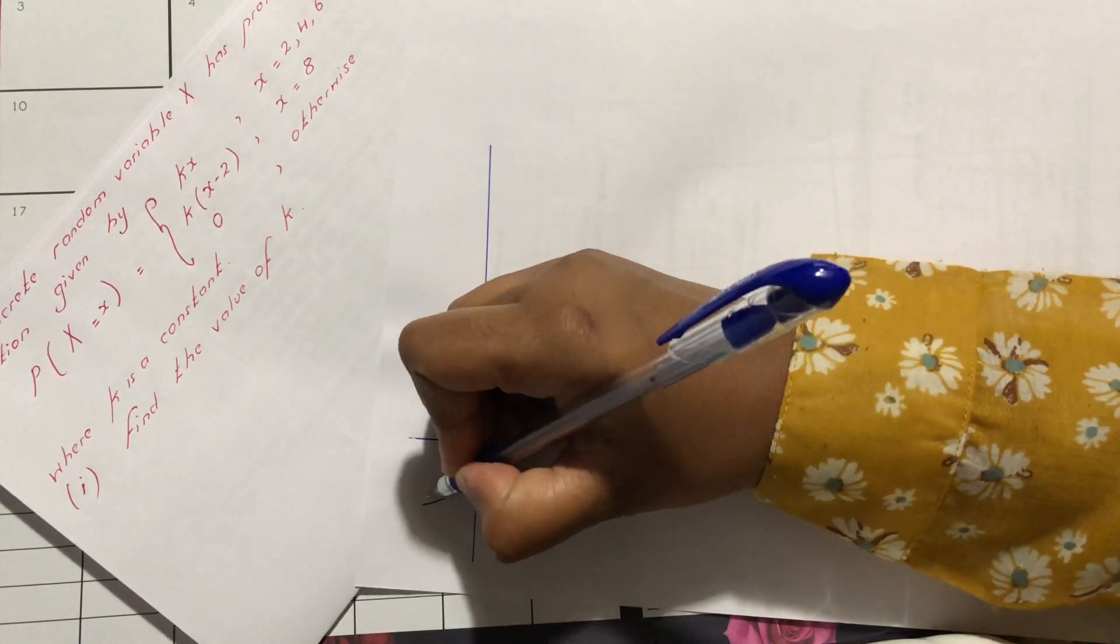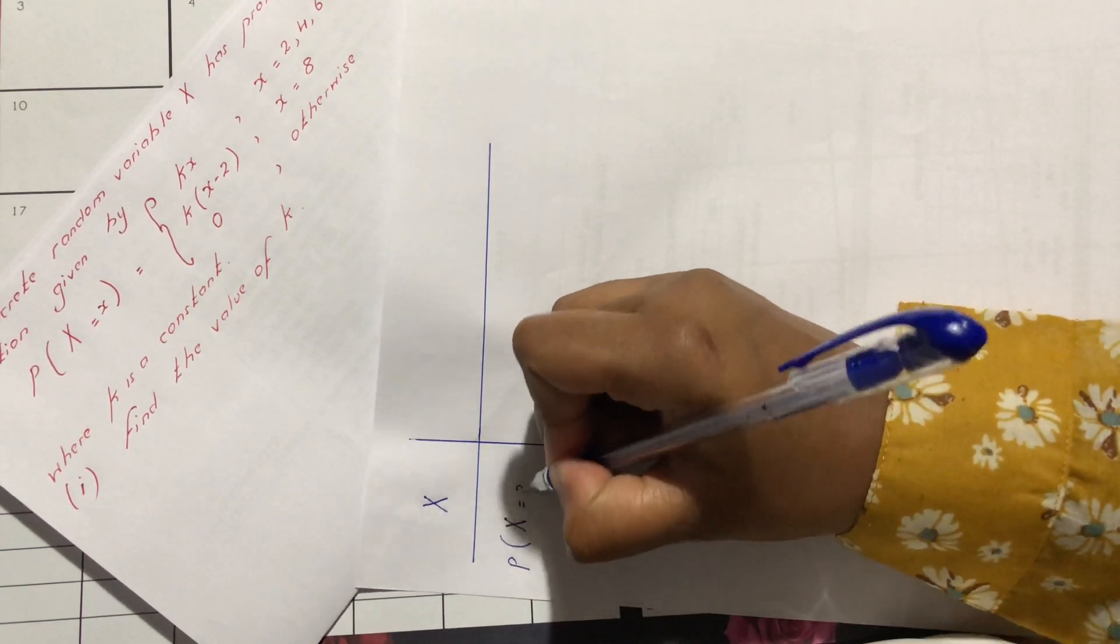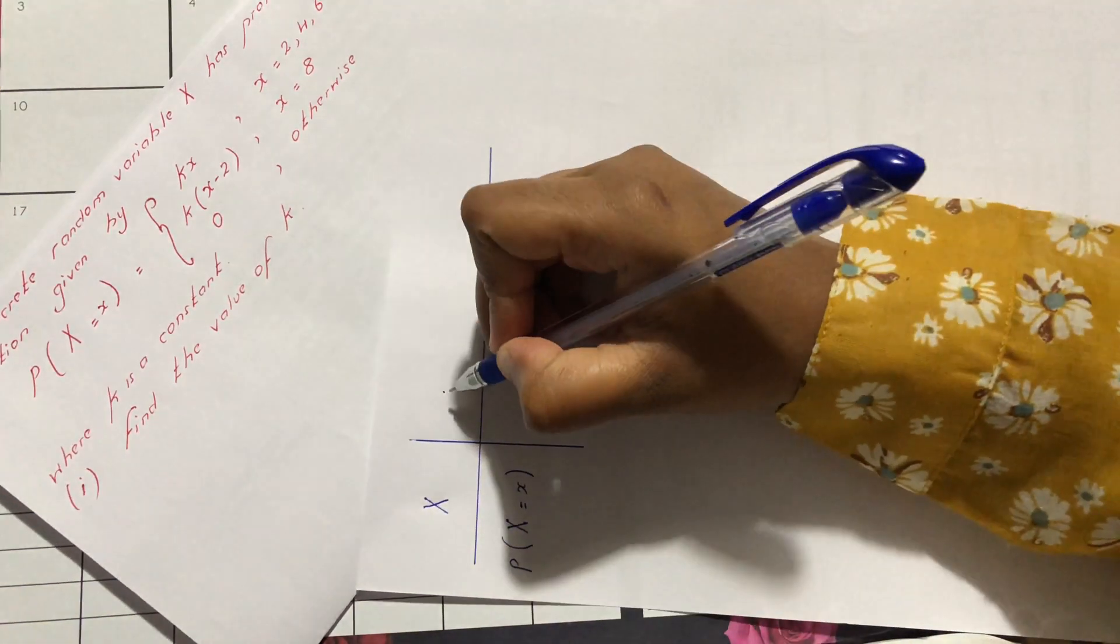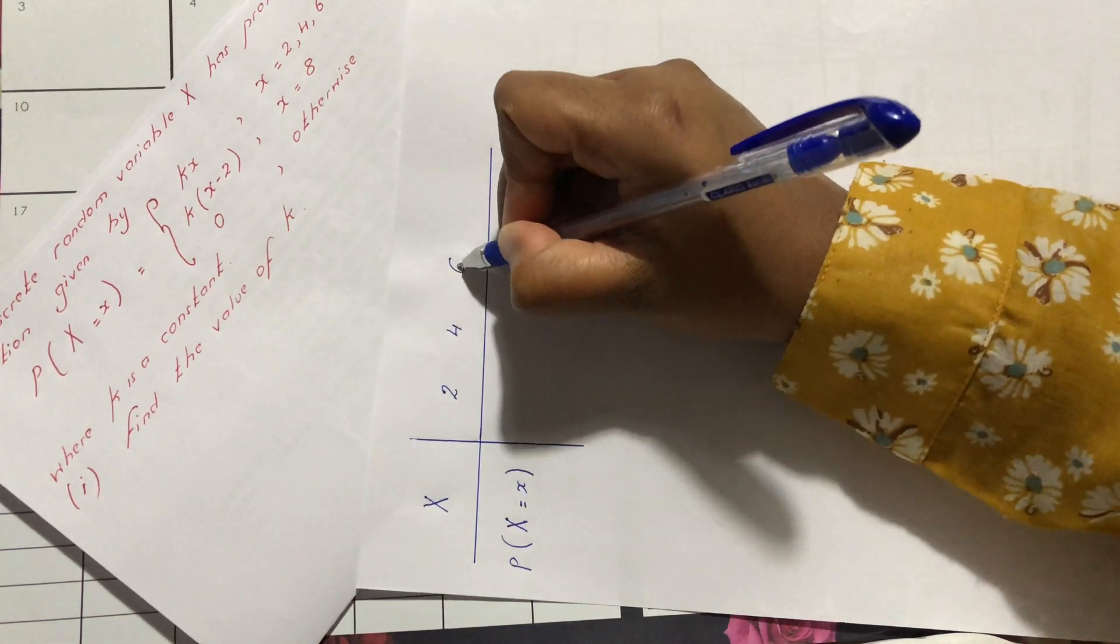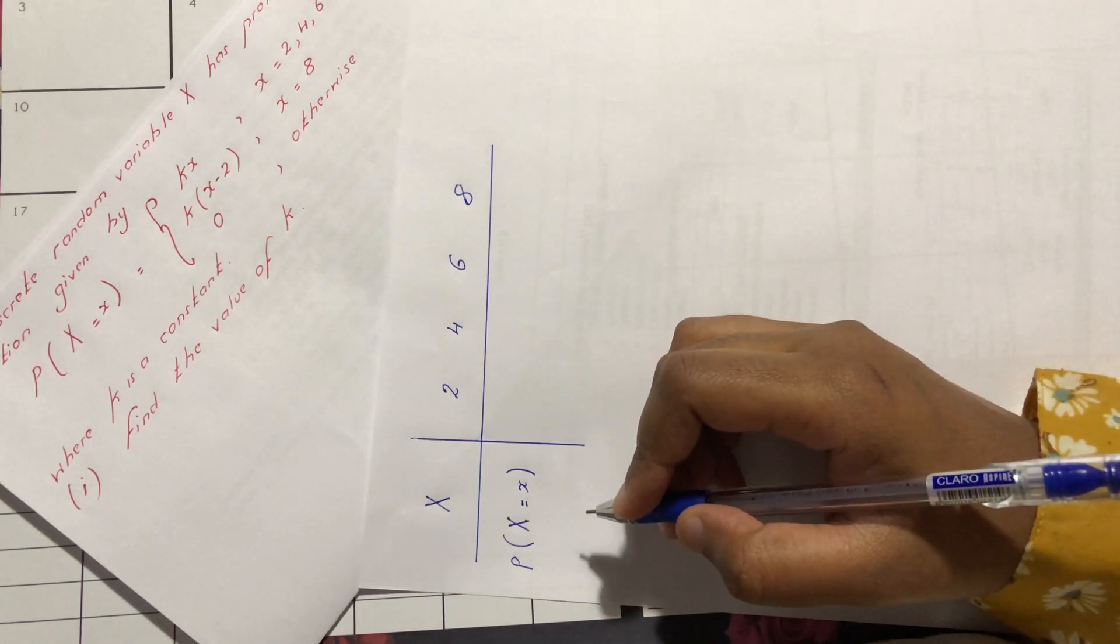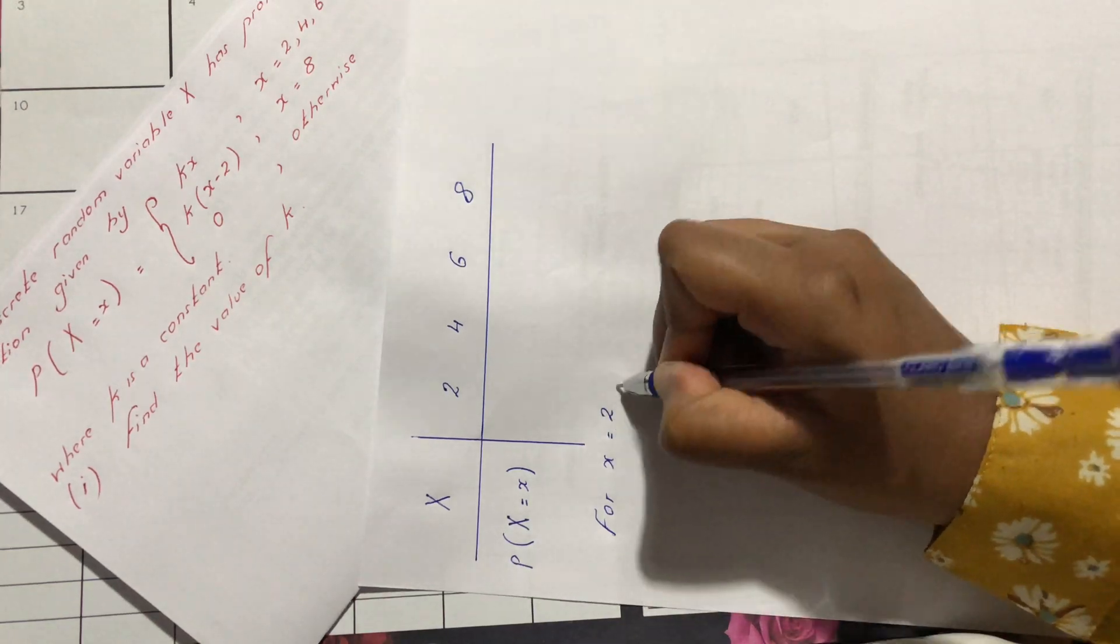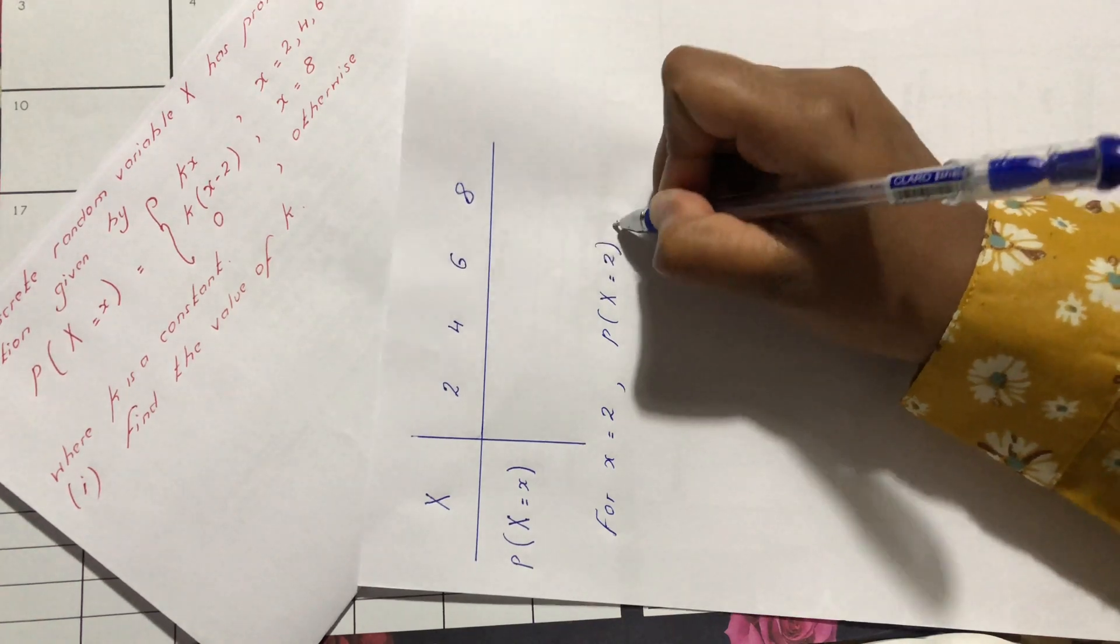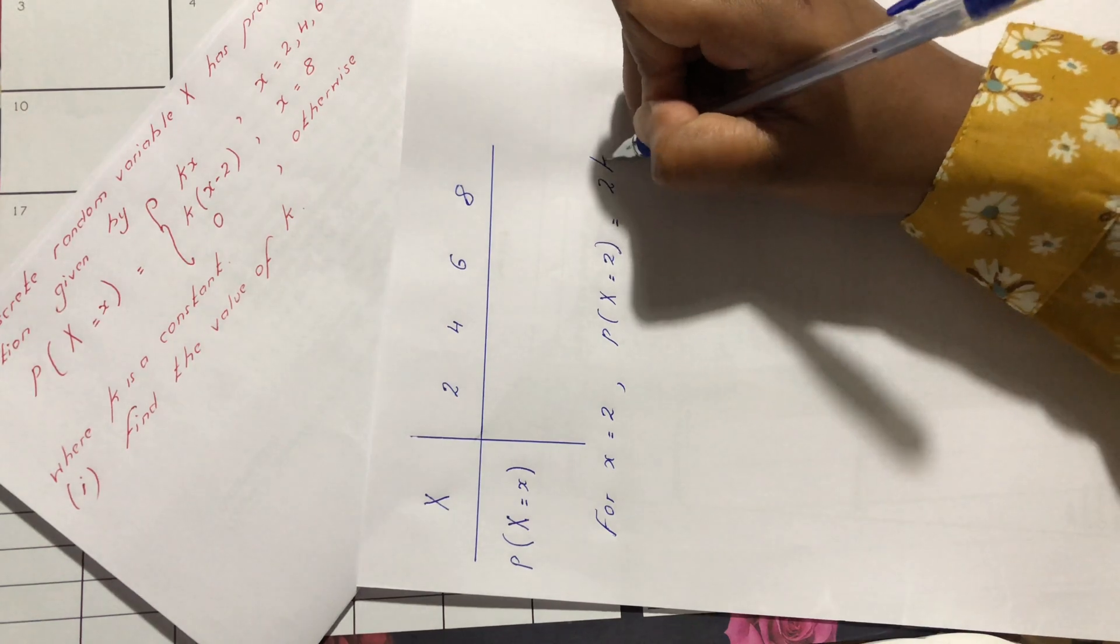We have our random variable x. The probability function is valid for values of x: 2, 4, 6, and 8. For each x, we are going to find the probability. For x equals 2, we are going to find the probability of x equals 2. We are going to replace in the function, so we have 2k.